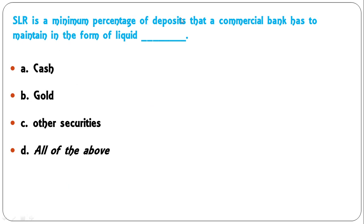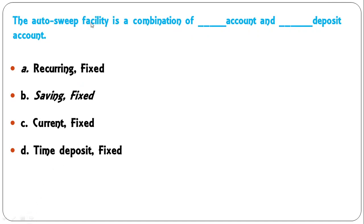SLR is a minimum percentage of deposits that a commercial bank has to maintain in the form of — liquid cash, gold, other securities, or all of the above? As per this statutory law, banks need to maintain deposits in the form of cash, gold, and other securities. All three forms are acceptable. So D — all of the above — is the correct answer.